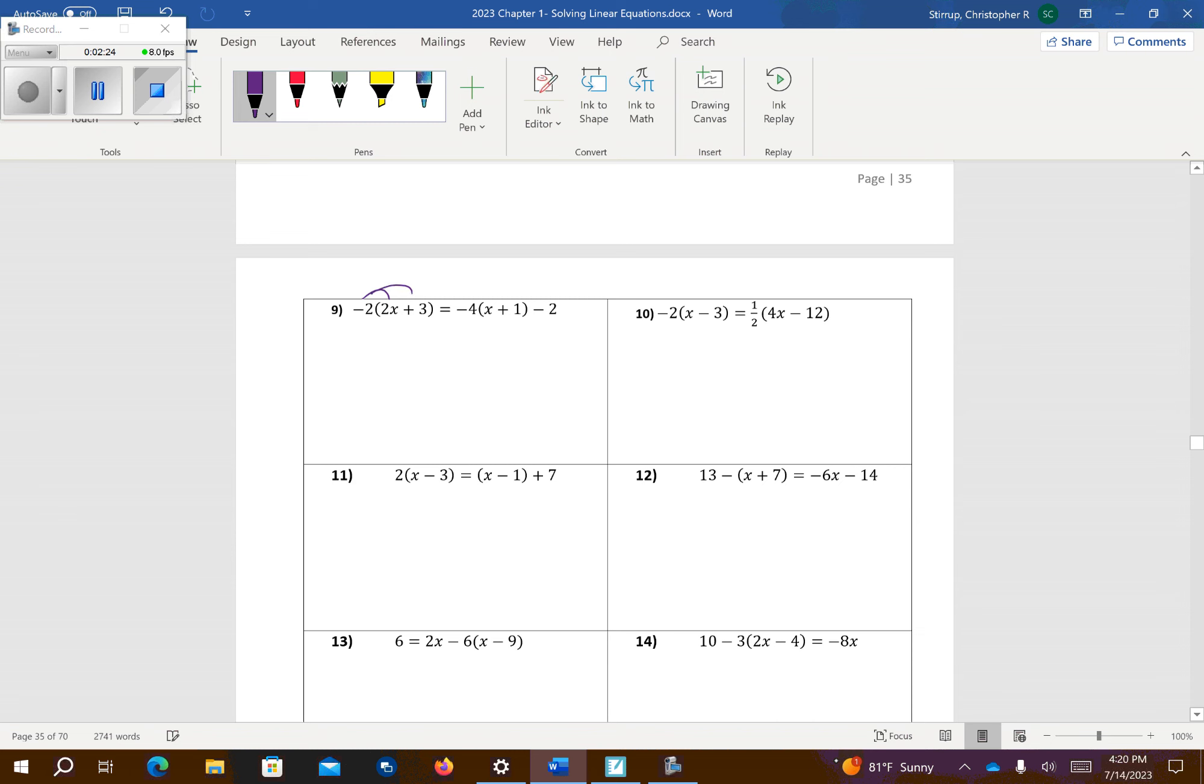Number 9, we're going to distribute the negative 2 over these parentheses first, so I get negative 4x minus 6. Let's distribute the negative 4 over these parentheses. Those are like terms, so I'm going to go ahead and combine them. Go ahead and start doing stuff. There's negative 4, so I'm going to add 4x to both sides. Those cancel, and those cancel, so negative 6 equals negative 6. So that means, yeah, that's true. So that's infinite solutions.